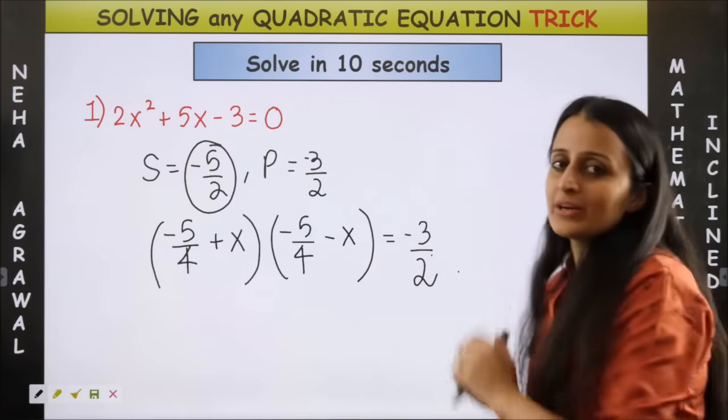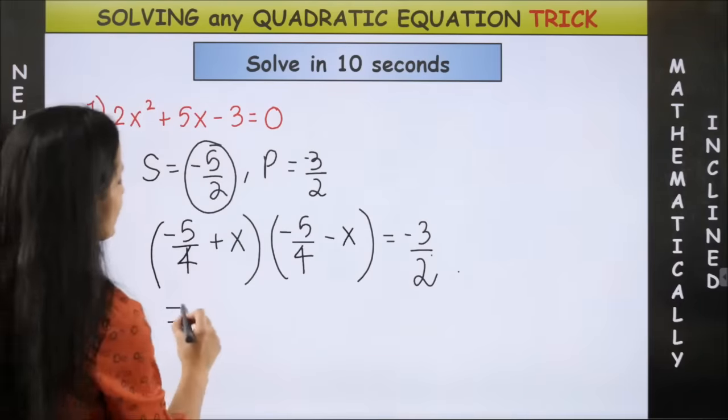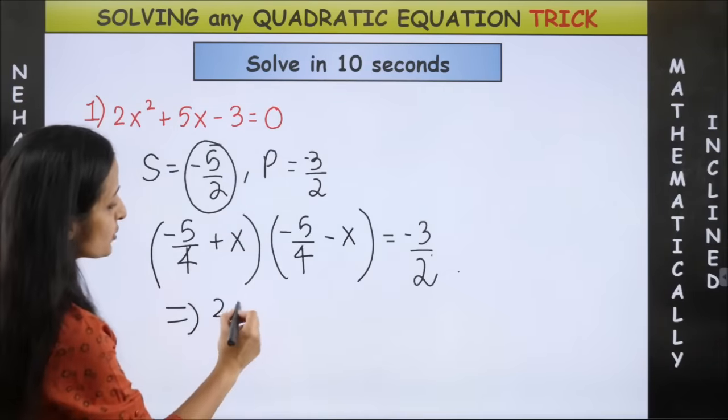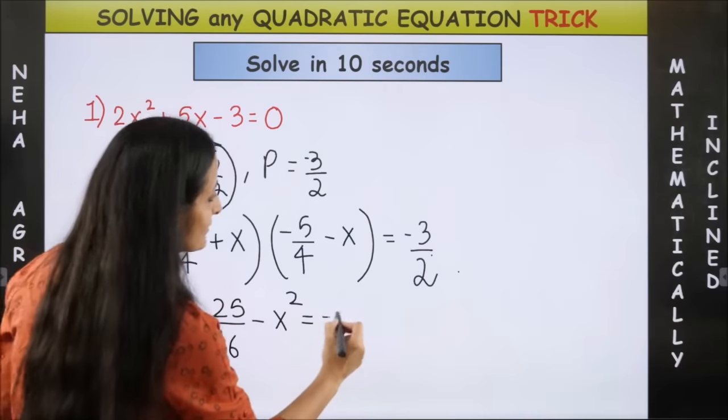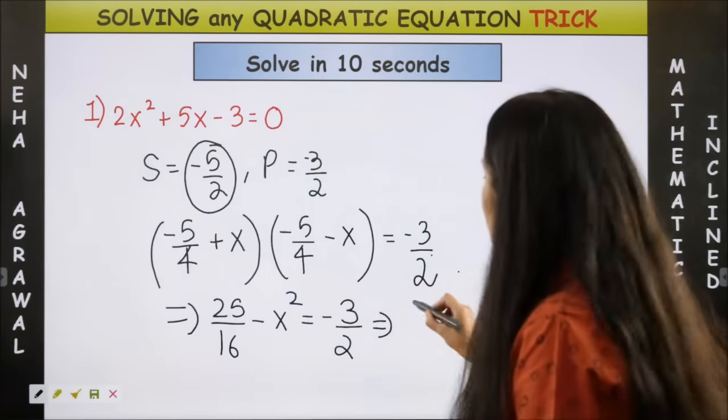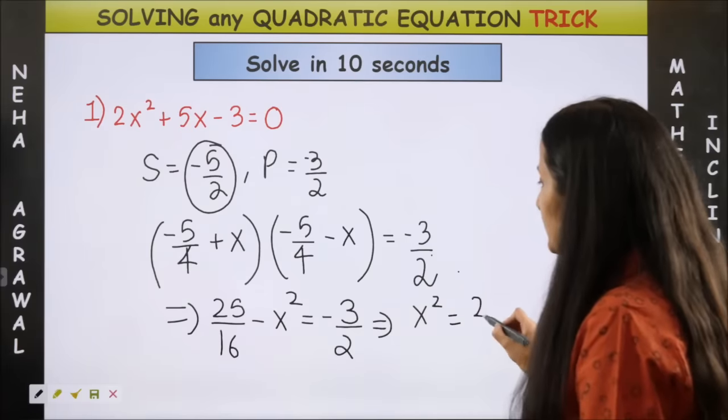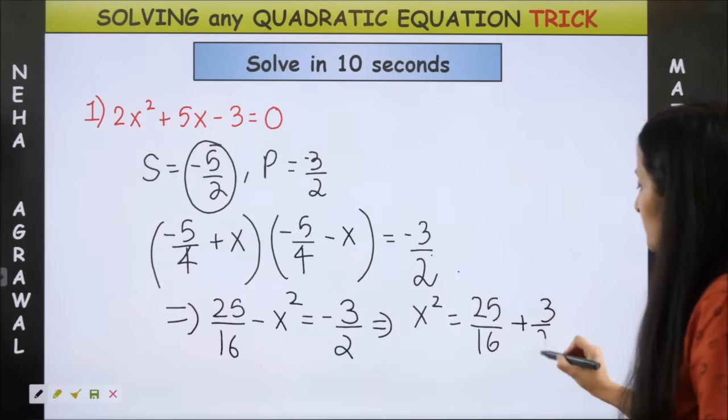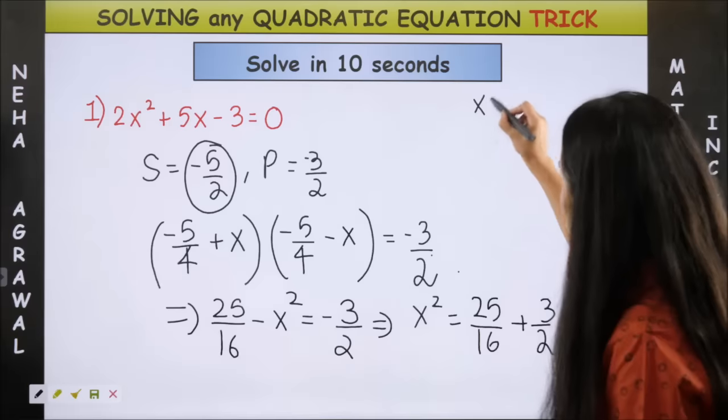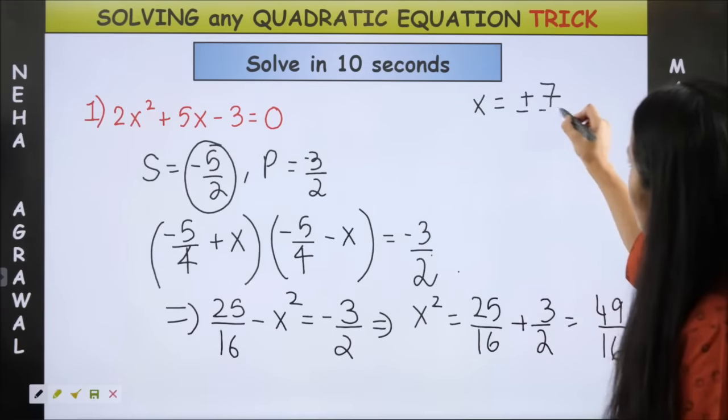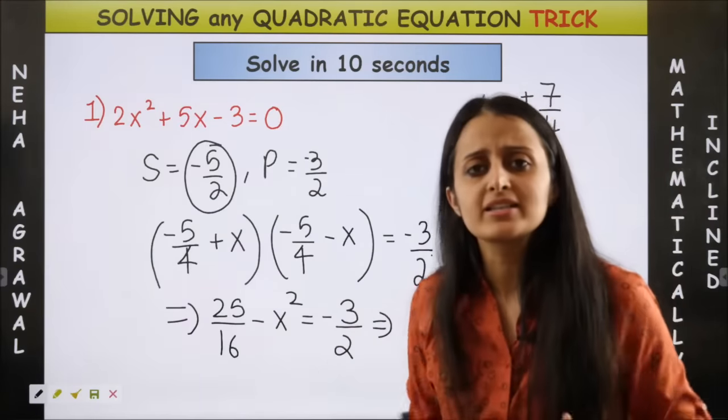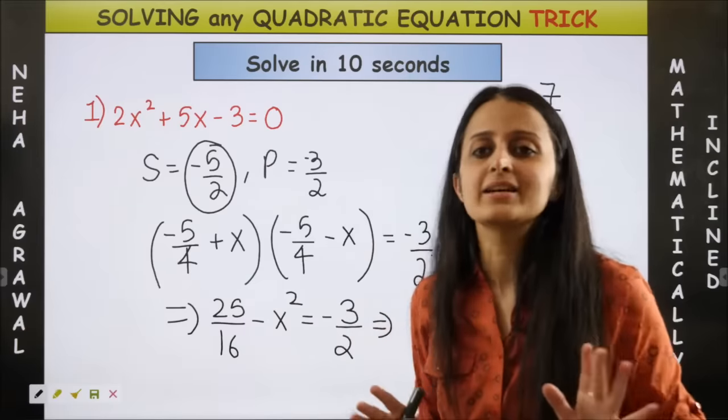Now this is another quadratic but if you watch it closely it is just the format a plus b a minus b. So this simply becomes a squared minus b squared right. So when you will solve this one your x squared becomes 25 by 16 plus 3 by 2 which on solving gives us 49 by 16 which means your x is simply plus minus 7 by 4. Now take any of them whether 7 by 4 in both the factors or minus 7 by 4 trust me you will end up getting the same answer.